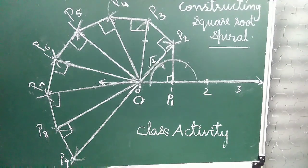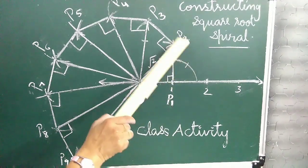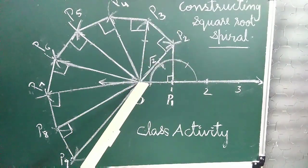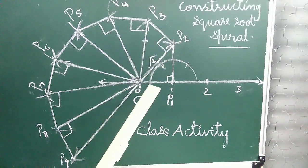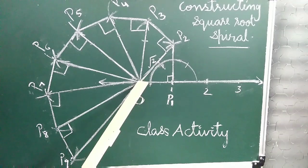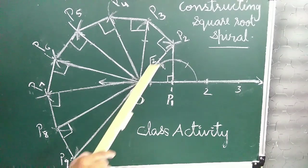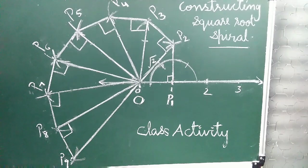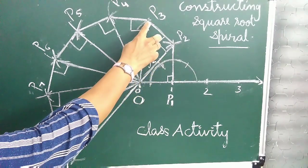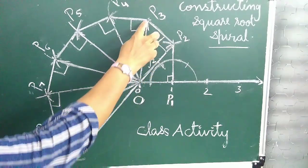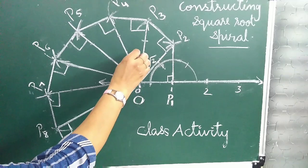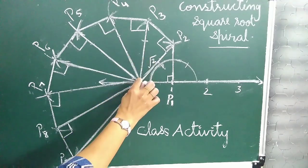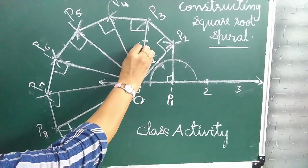Now we draw a line segment of unit length P2P3 on OP2. Again we get a right-angled triangle OP2P3, and OP3 is the hypotenuse. Join OP3, and according to Pythagoras theorem, OP3 equals root 3.